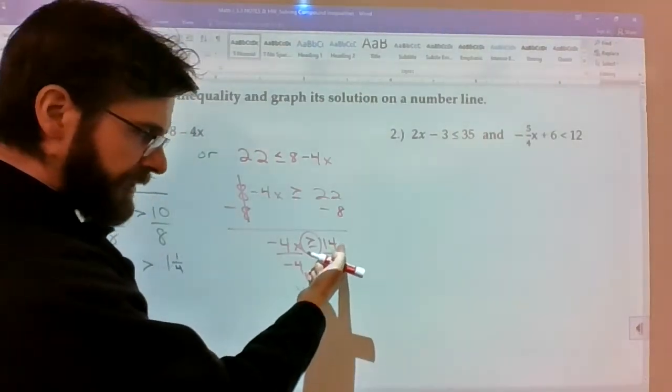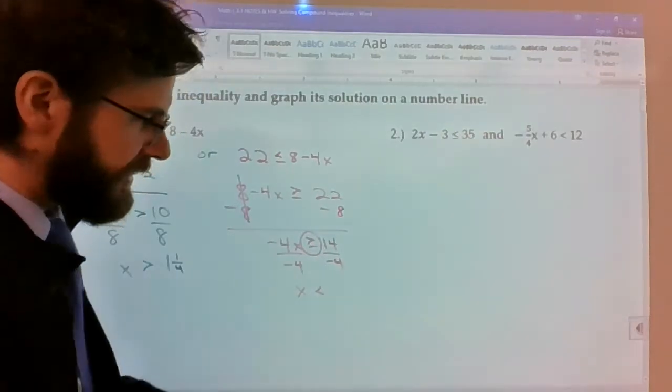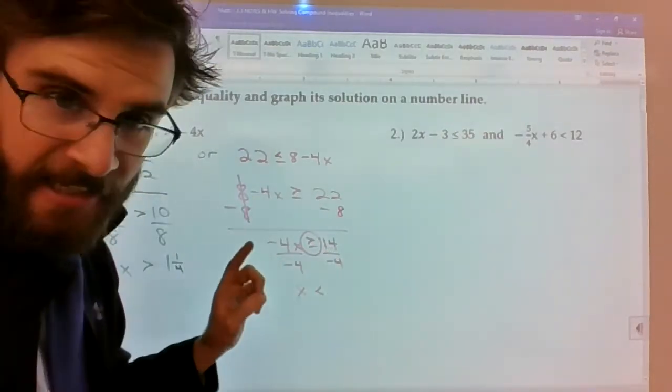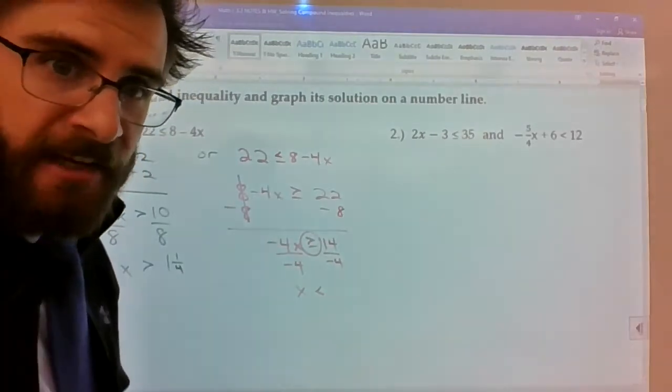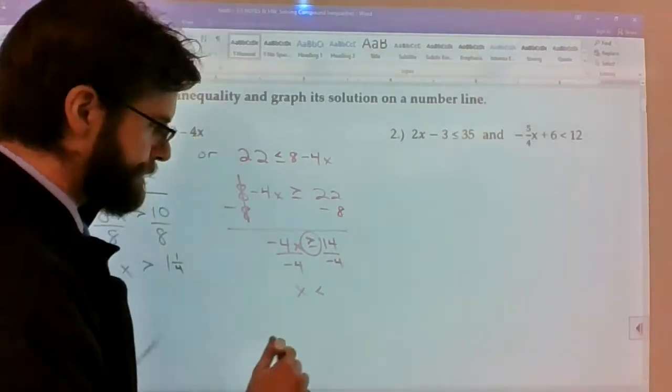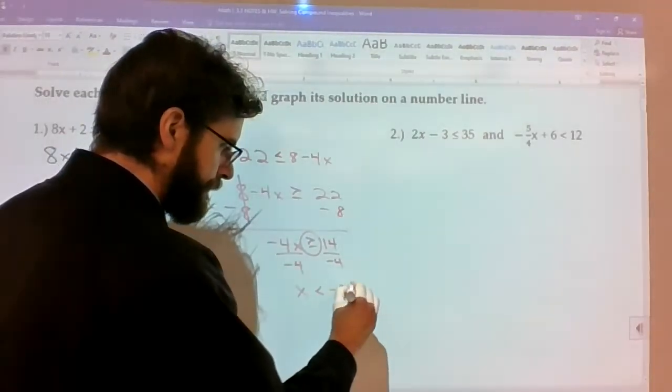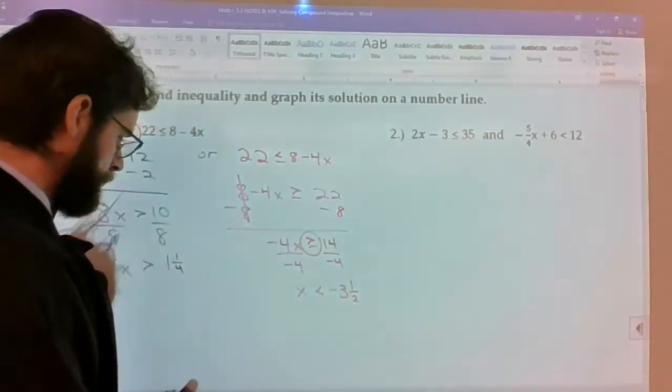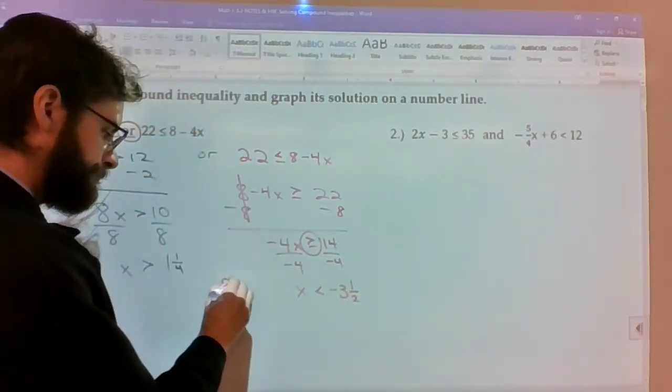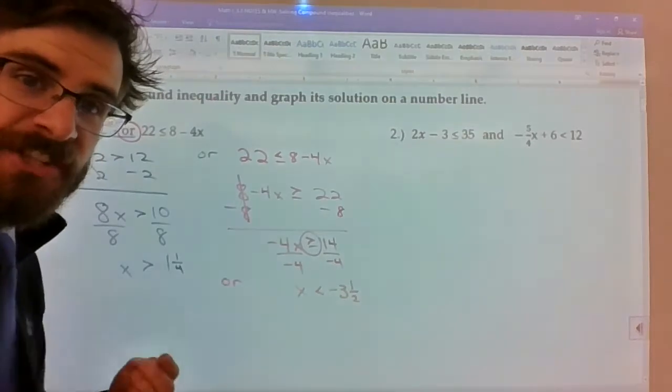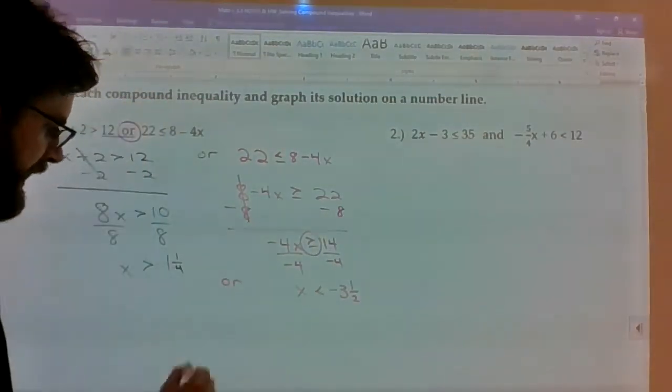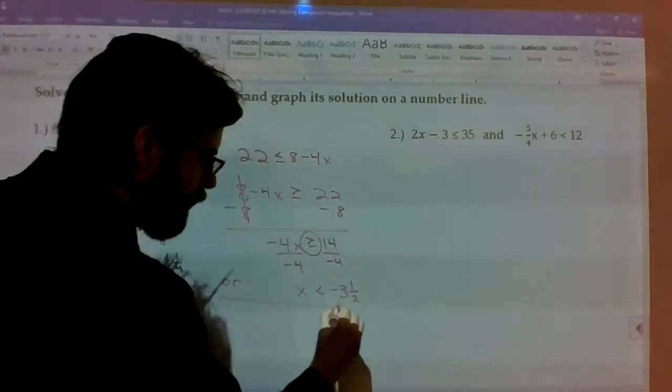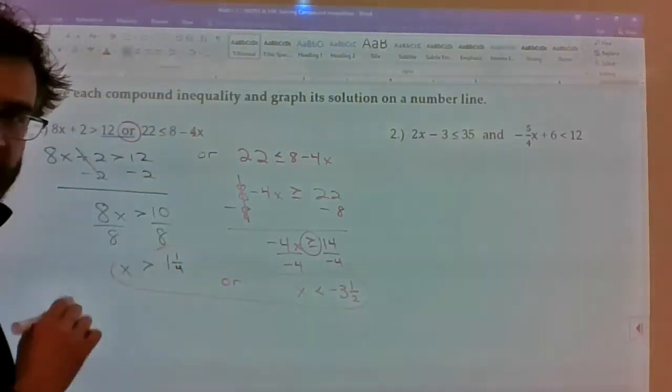Alright. And then when you take 14 divided by negative 4, you can cut the top in half and get 7, cut the bottom in half, get negative 2. 7 over negative 2 is negative 3 and a half. Alright. So here's technically the solution.